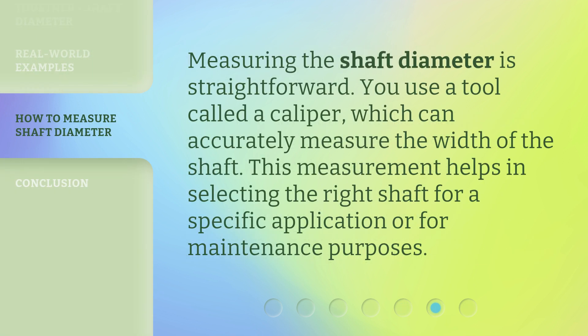Measuring the shaft diameter is straightforward. You use a tool called a caliper, which can accurately measure the width of the shaft. This measurement helps in selecting the right shaft for a specific application or for maintenance purposes.